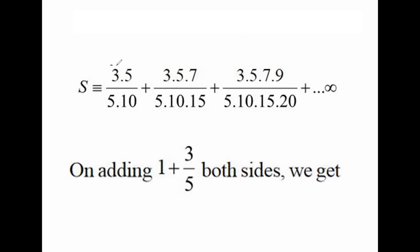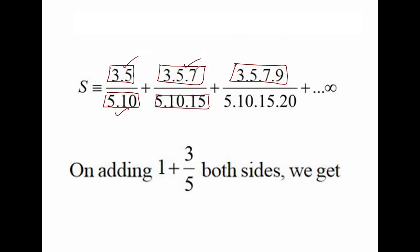Here in the numerator there are two terms; here there are three terms; here there are four terms. And in the denominator there are two terms, three terms respectively. So the number of terms in the numerator and denominator match for each fraction.